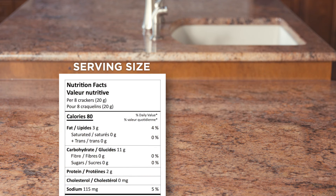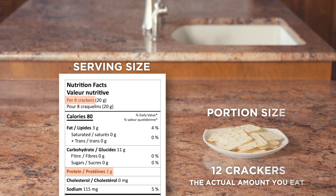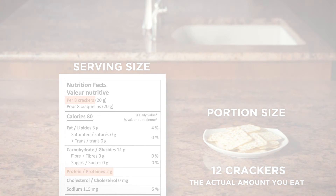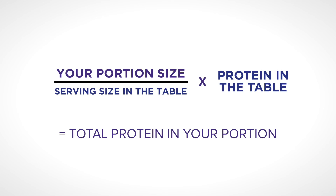Let's look at another example, but now it's your turn to try the calculation. Here are store-bought crackers. The table shows that a serving of 8 crackers provides 2 grams of protein. But let's say you want to have 12 crackers. How much protein does that give you? Feel free to pause the video here to take your time and do the calculation.